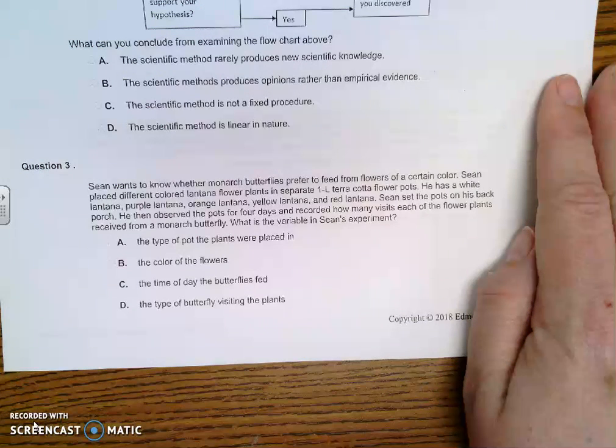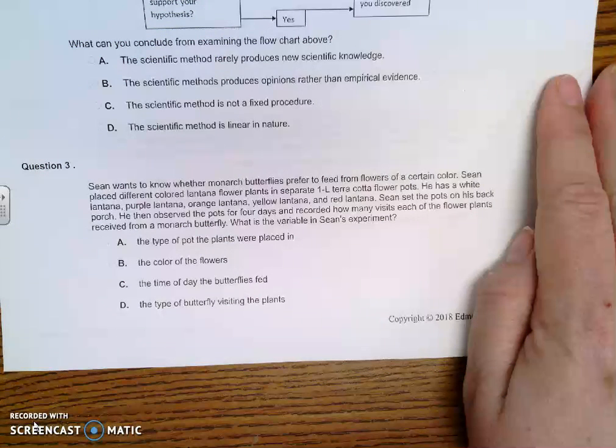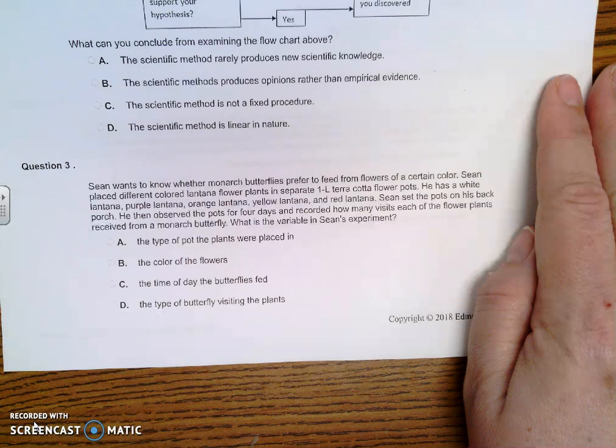And the answer for number 3 is B, the color of flowers. So a variable is the one factor that differs in a controlled experiment. In this case, the color of the flowers is the variable. All the other factors in a controlled experiment, for example, the size of the pot, the amount of sunlight, the amount of water, those should be identical to each other.